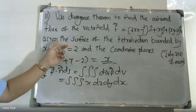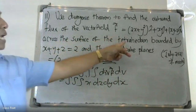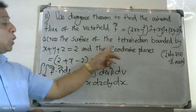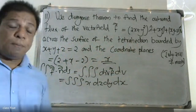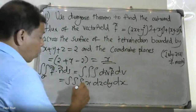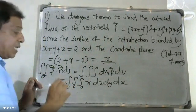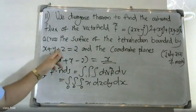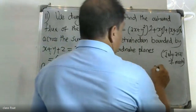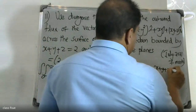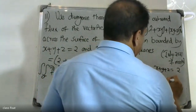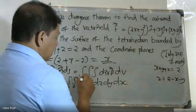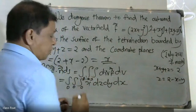We set up the triple integral over the tetrahedron bounded by x plus y plus z equals 2 and the coordinate planes. The limits are: z from 0 to (2 - x - y), y from 0 to (2 - x), and x from 0 to 2.